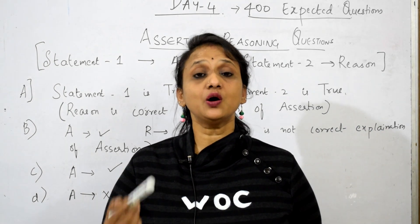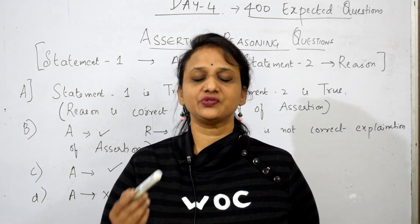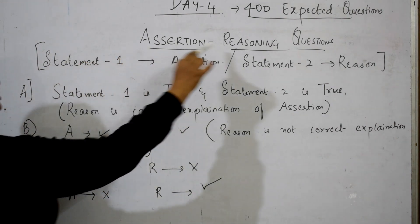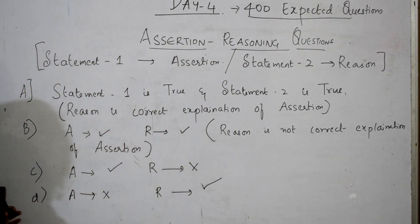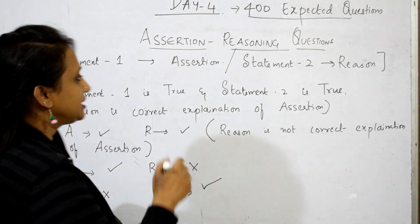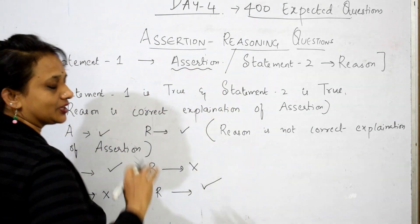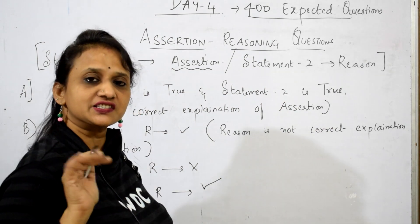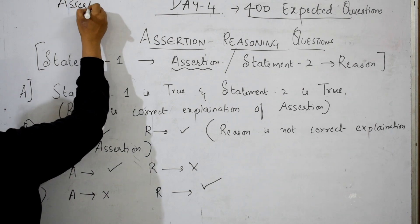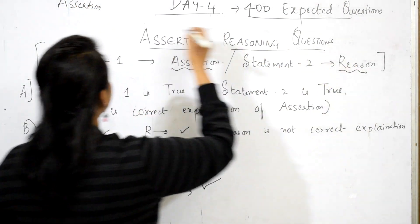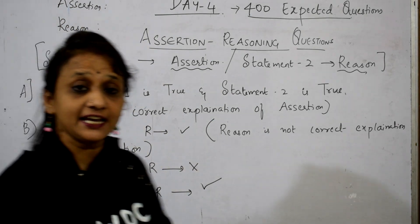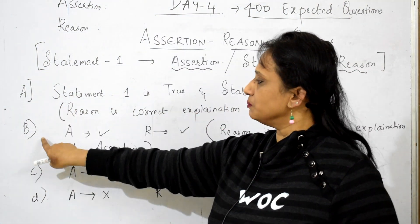First see how to understand the question. If an assertion reasoning question is given, how to understand it. Remember students, there are basically two statements in assertion reasoning questions. Statement 1 is always the assertion, and statement 2 is always the reason. So they will give you two statements — one assertion statement and one reason statement. In that they are going to give you four options: A, B, C, and D.